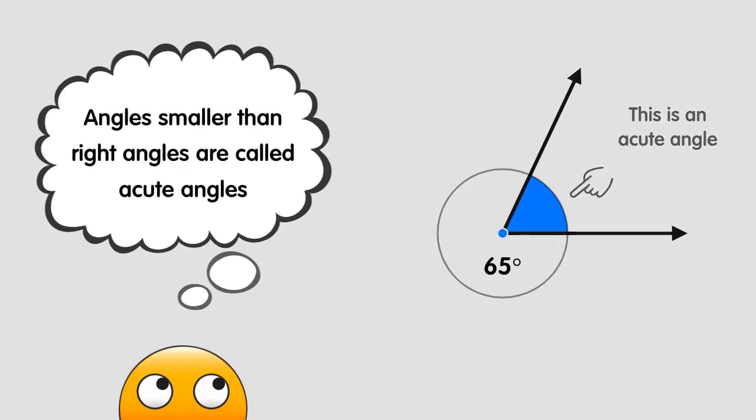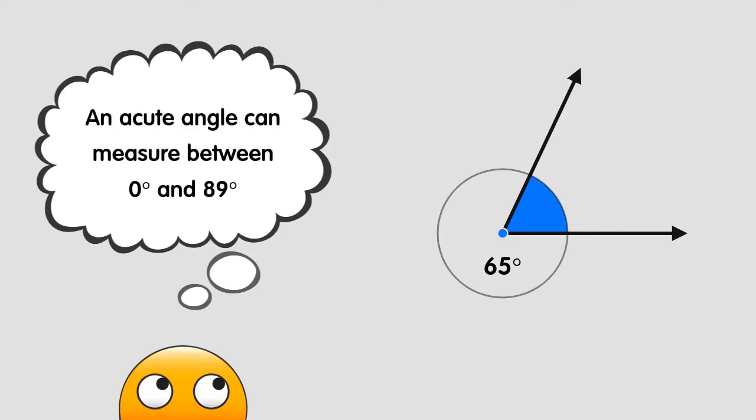Angles that are less than right angles are called acute angles. An acute angle can measure between 0 and 89 degrees.